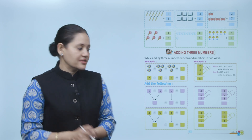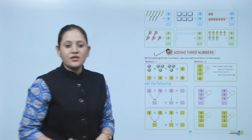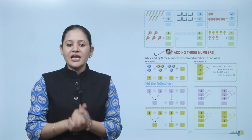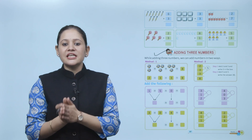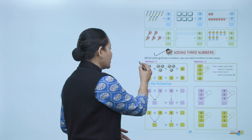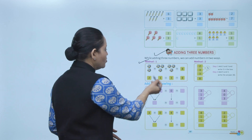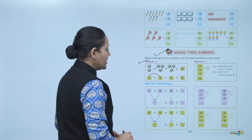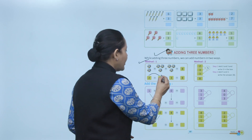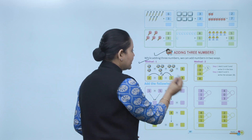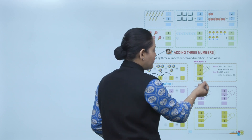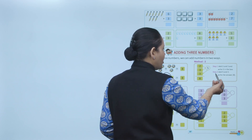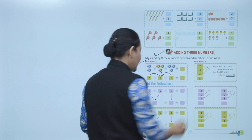Next is adding three numbers. We will learn how to add more than two numbers. While adding three numbers we can add in two ways. Method one: add two plus three plus three. Two plus three equals five, then five plus three equals eight. Step one: add two and three, write five; add five and three, answer is eight.